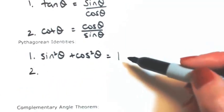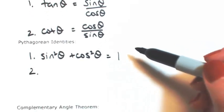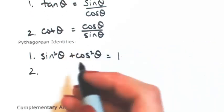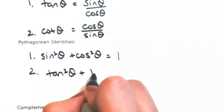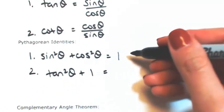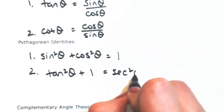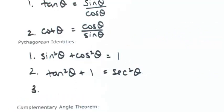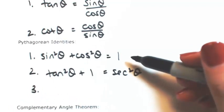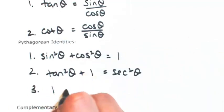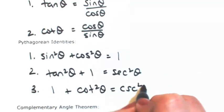The other two come from the first one. If you divide both sides by cosine squared, you get tangent squared plus one equals secant squared. If you divide both sides by sine squared, you get one plus cotangent squared equals cosecant squared.